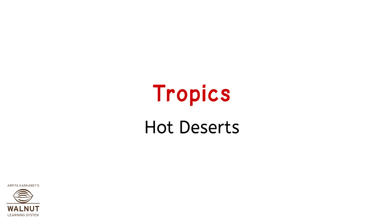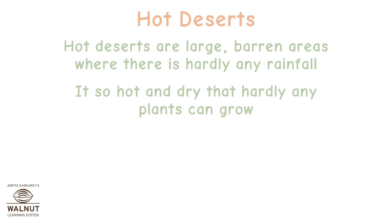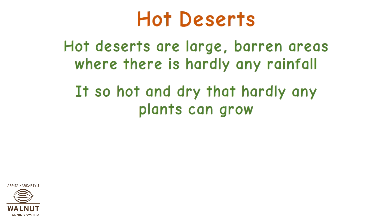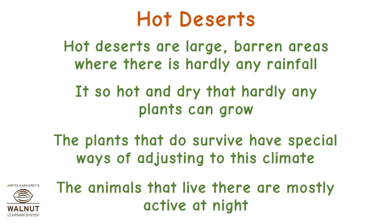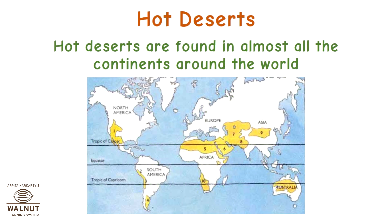Tropics — Hot Deserts. Hot deserts are large, barren areas where there is hardly any rainfall. It's so hot and dry that hardly any plants can grow. The plants that do survive have special ways of adjusting to this climate. The animals that live there are mostly active at night. Hot deserts are found in almost all the continents around the world.